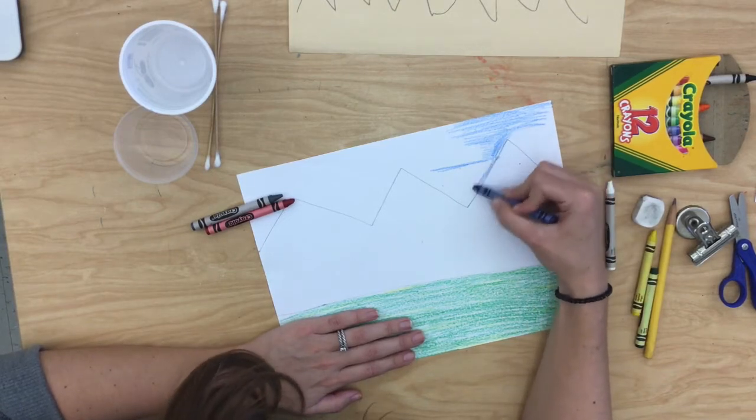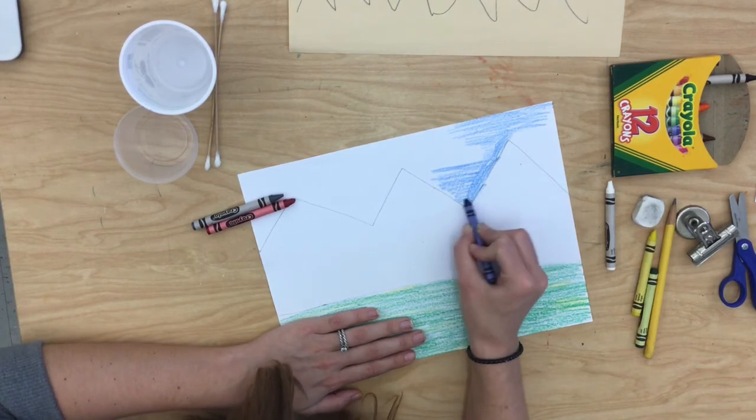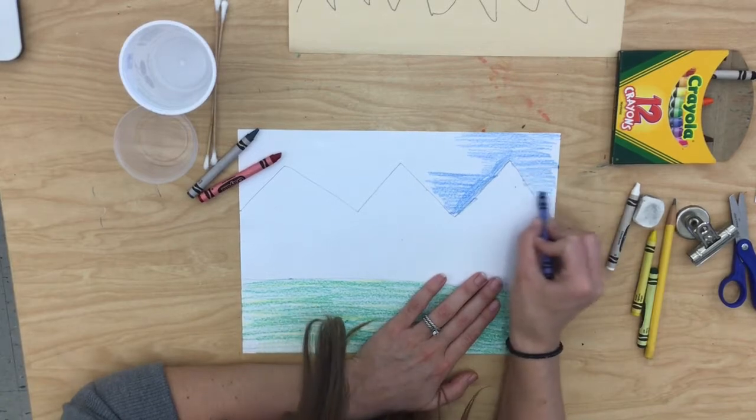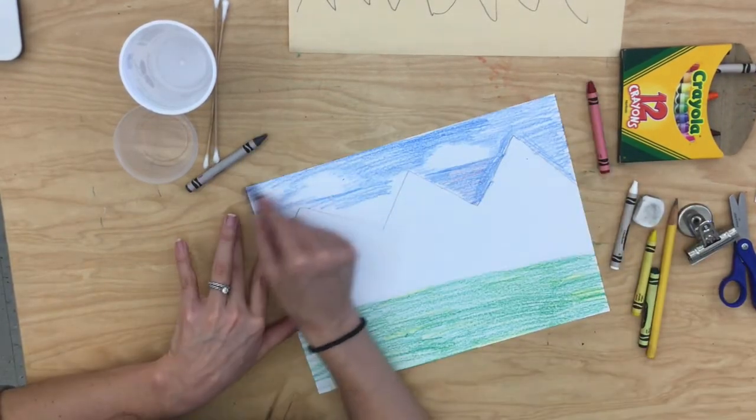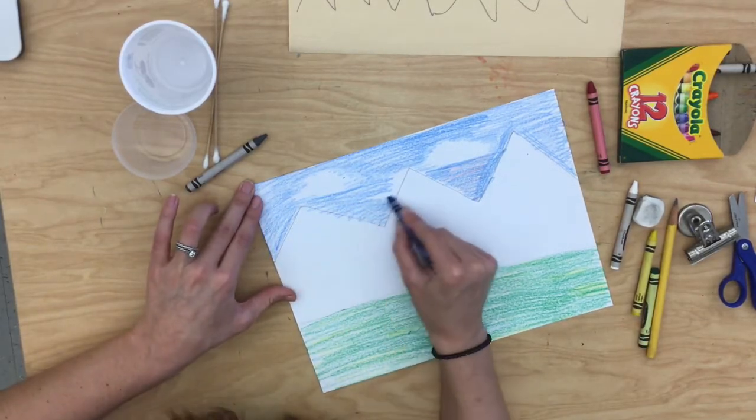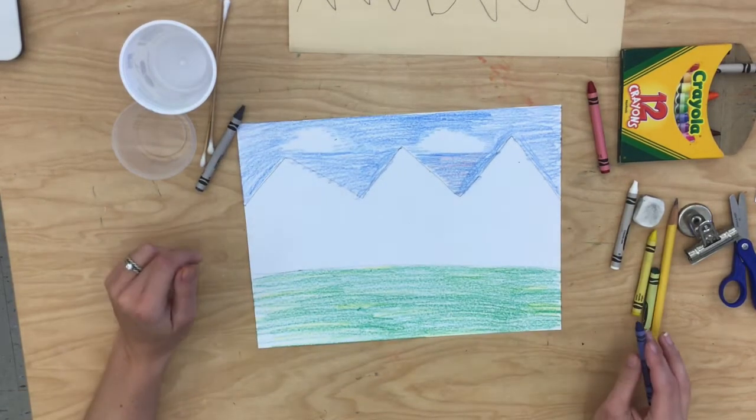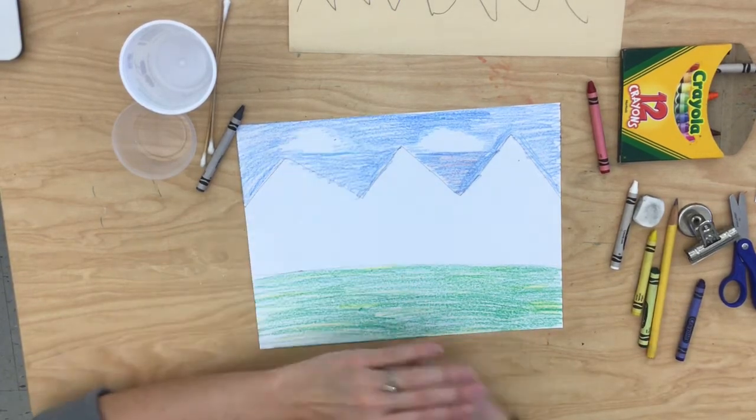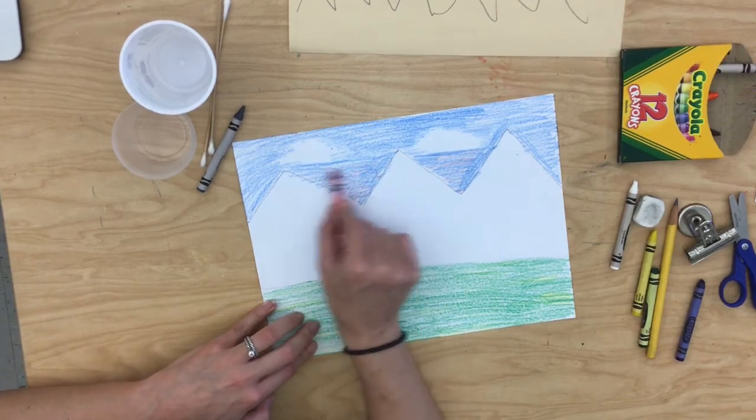I'm going to be careful not to get inside my mountains. I don't want my mountains to be blue. They're going to be a different color. I have my grass in the front, my sky above, and now comes the messy part.